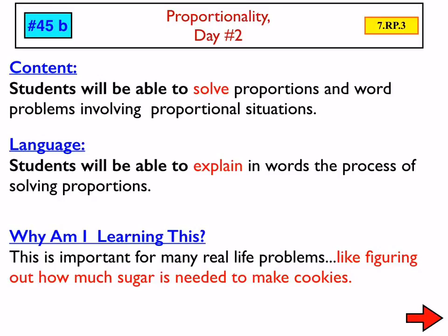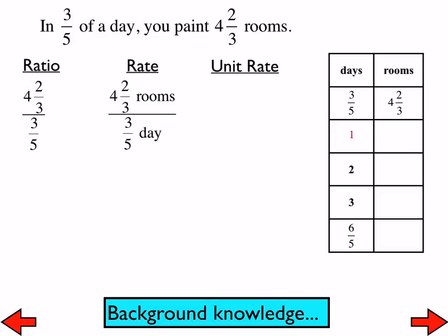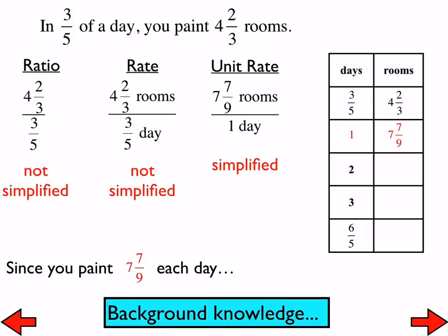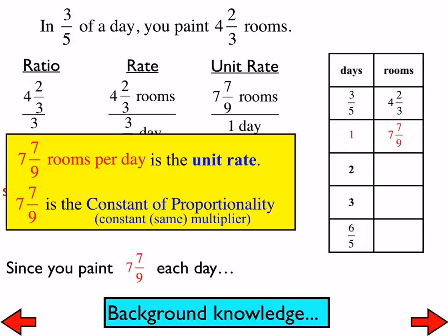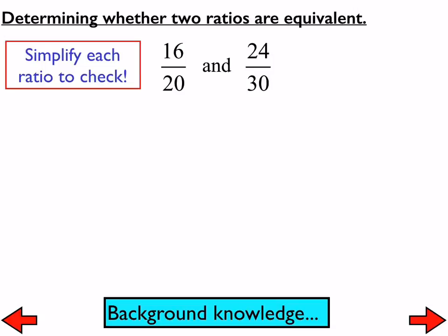So let's go ahead and get started. This was a problem that we did several days ago, where what we needed to do is take that situation, and even though we're given a ratio and a rate within that situation, we need the unit rate, because the unit rate is a very powerful thing — it can allow us to find lots of different things. So the unit rate here was 7 and 7 ninths rooms per day, and that gives us that constant of proportionality or that constant multiplier.